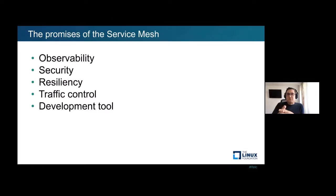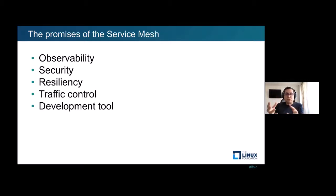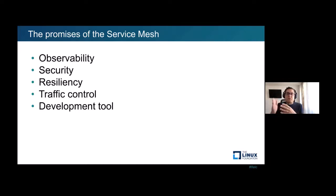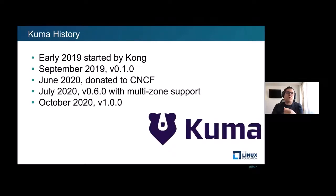The promises of the service mesh are essentially to provide observability so you can see what's going on in the communication between all these participants. It allows you to secure all these connections and provides resiliency — if some connections get dropped, they can automatically be recreated. You can control traffic to redirect communication between various versions of a service. And it's also a great development tool.